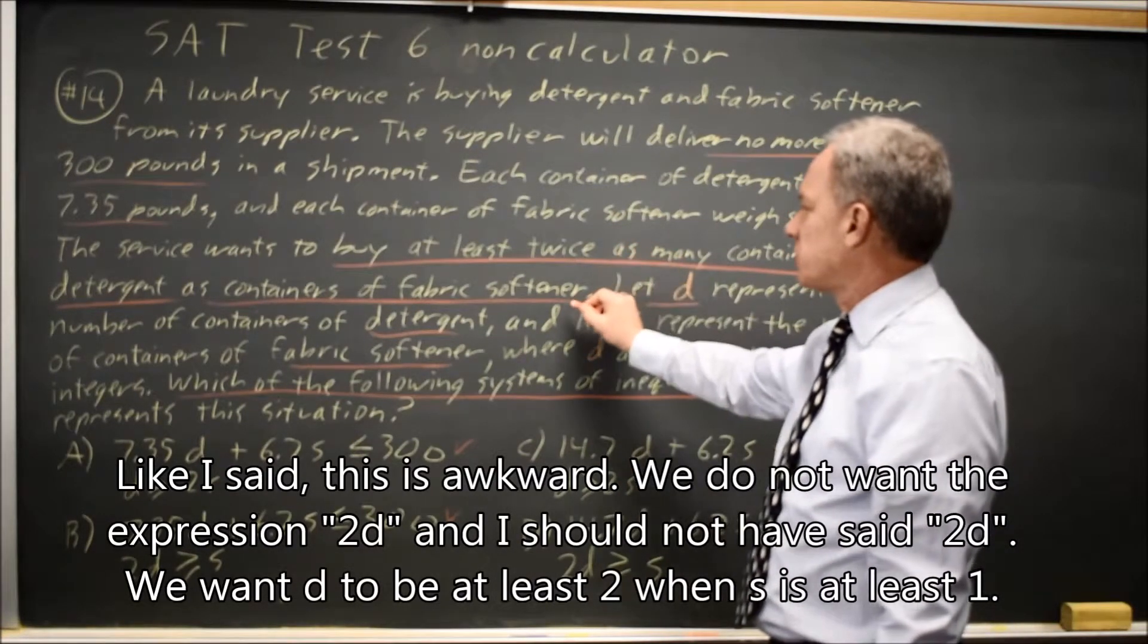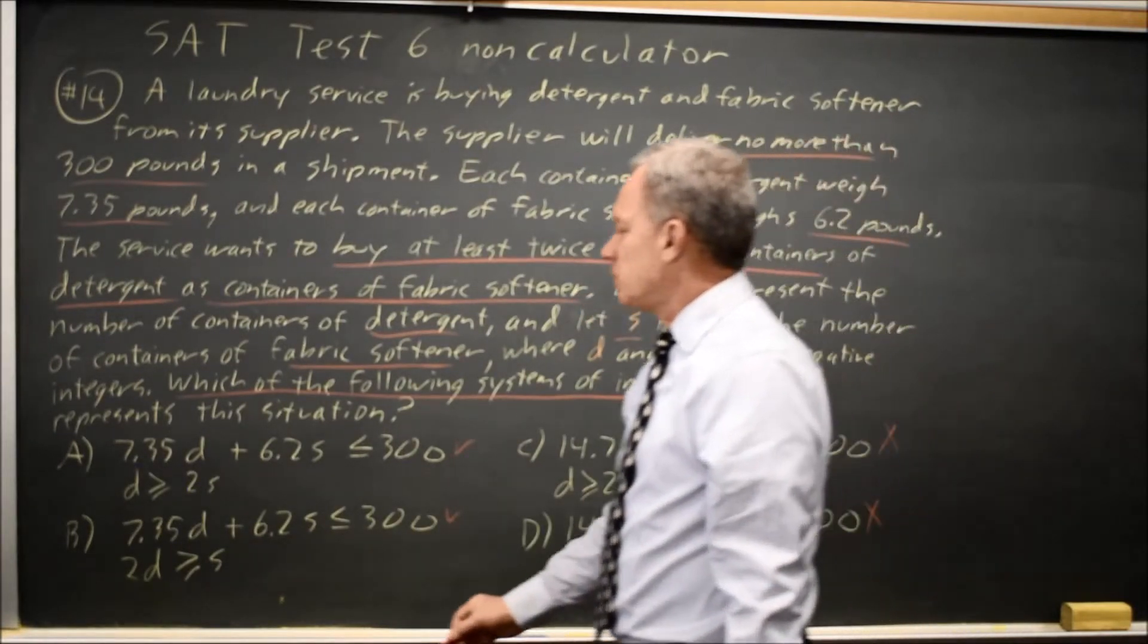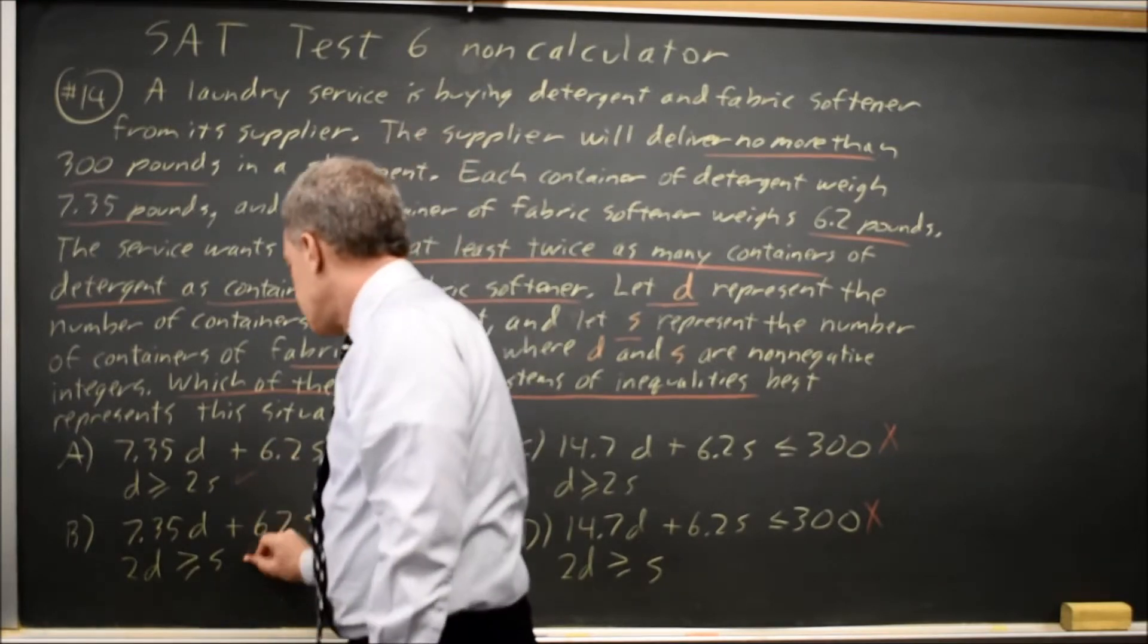And that would be twice as many containers of detergent as fabric softener. So if S is one D has to be at least two, that would be choice A and not choice B.